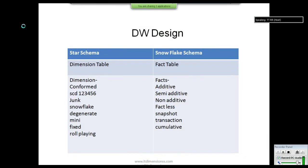When a data modeler or data architect designs a data warehouse, they mainly follow two design strategies or methods: the star schema design or the snowflake schema design. These are the two main designs.